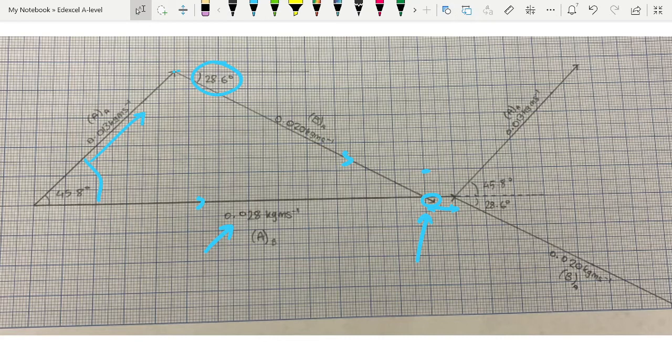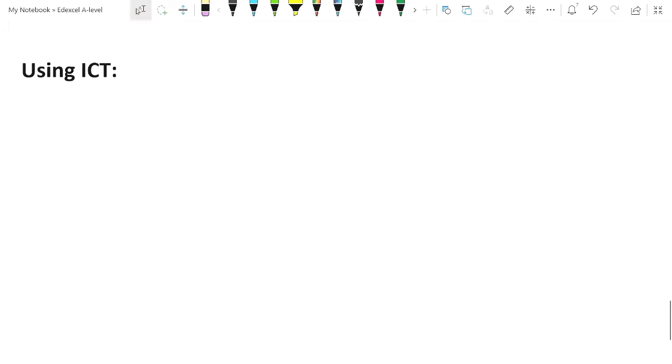The main theoretical purpose of Core Practical 10 is to be able to construct vector diagrams from data in an experiment. The main experimental purpose is understanding the advantages and disadvantages of using ICT in an experiment like this. So we're going to go through the reasons why you might or have to use ICT.